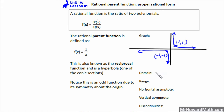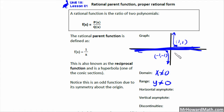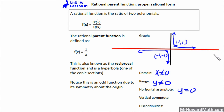The domain of this rational parent function is x cannot equal 0 because of the vertical asymptote — it never reaches an x-coordinate of 0. The range is y cannot equal 0 because of the horizontal asymptote at y equals 0. The horizontal asymptote is an imaginary horizontal line where the graph approaches but never touches. The vertical asymptote is at x equals 0, and it has a discontinuity at x equals 0.